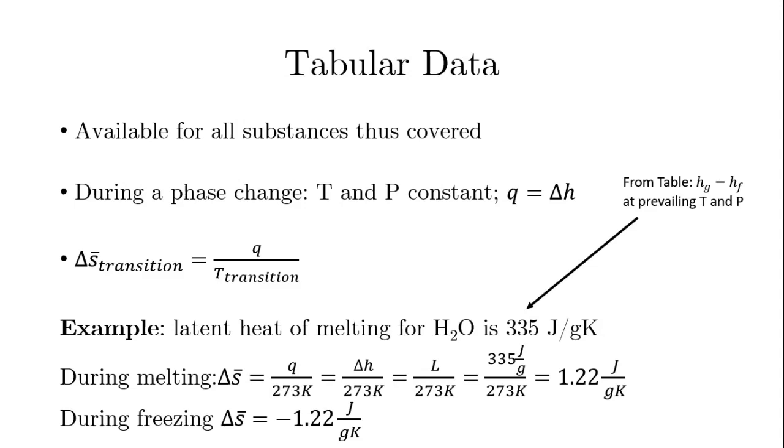So during that time, we equate heat with enthalpy, and enthalpy does not change with temperature at that time either. Q is equal to delta H, and we've seen in the tables that we can just take the enthalpy of the gas, which is at quality of 1, the enthalpy of the liquid, which is at quality of 0, subtract the two, and that gives us the delta H of transition, or the latent heat of transition, between a liquid substance and a vapor substance at the prevailing temperature and pressure.